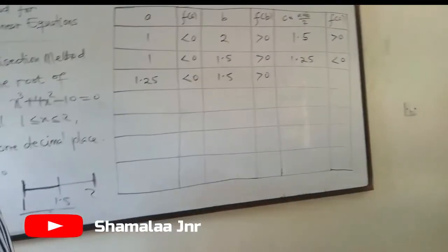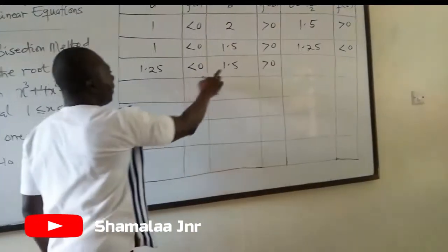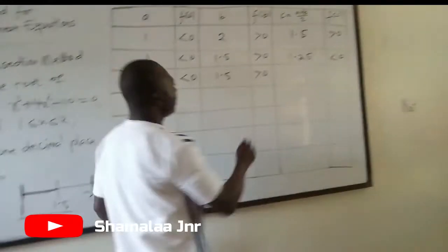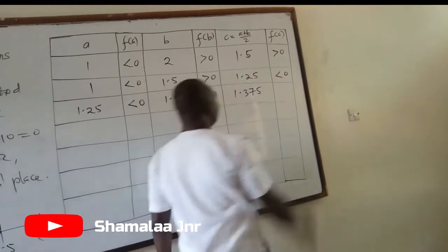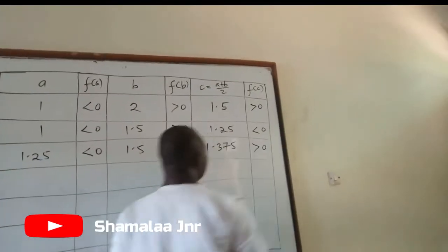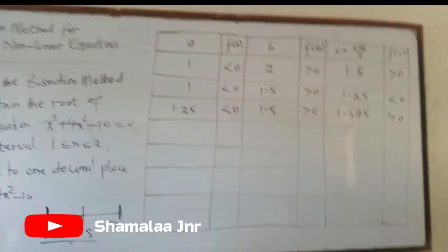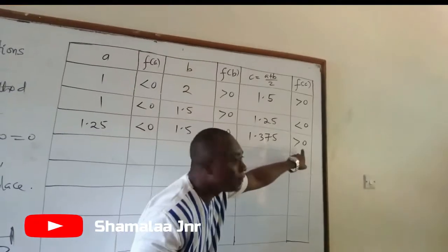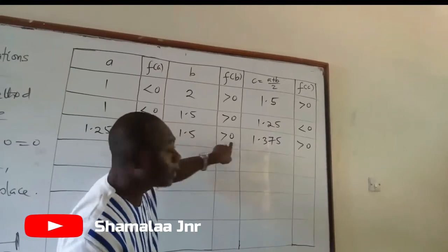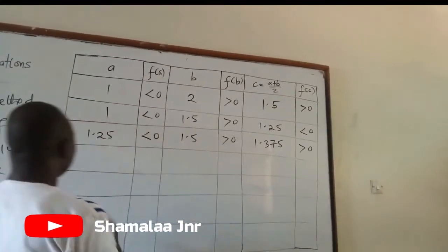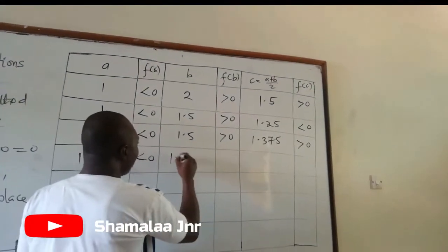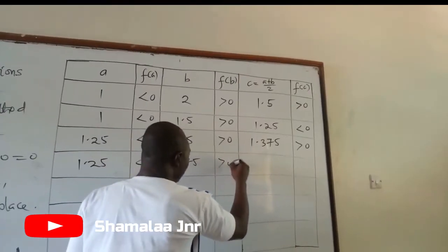Now you find (1.25 + 1.5) / 2, which gives 1.375. Then you find the functional value of 1.375, which is greater than 0. Because it is greater than 0, you replace the one whose functional value is also greater than 0, so 1.375 replaces 1.5.